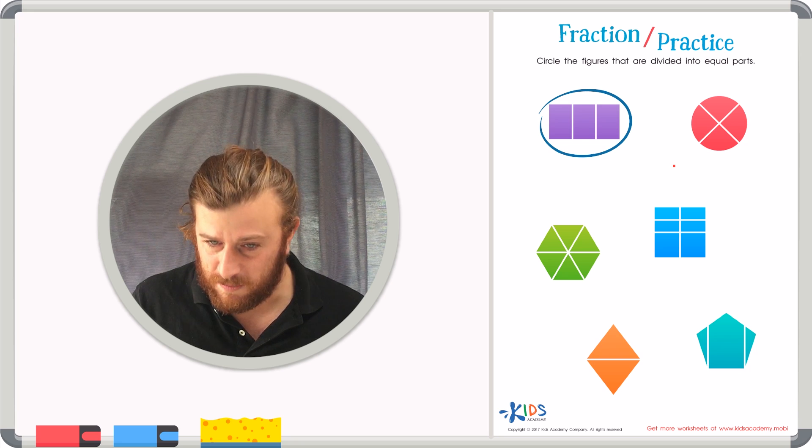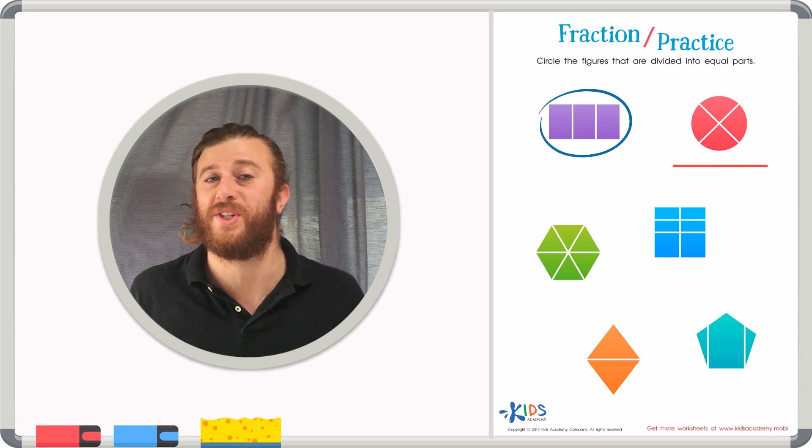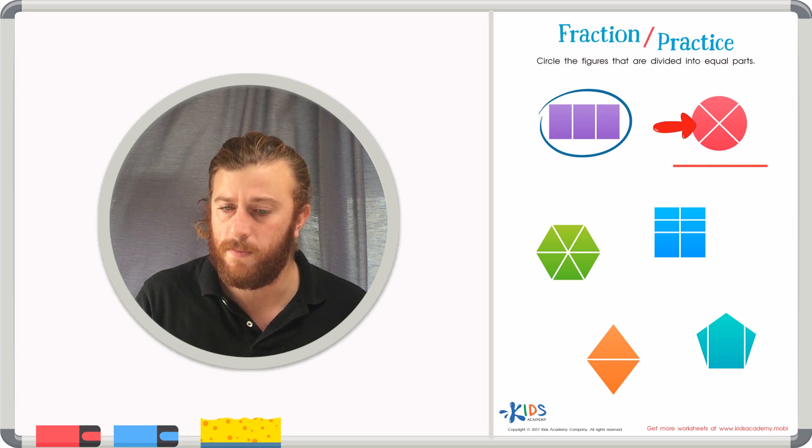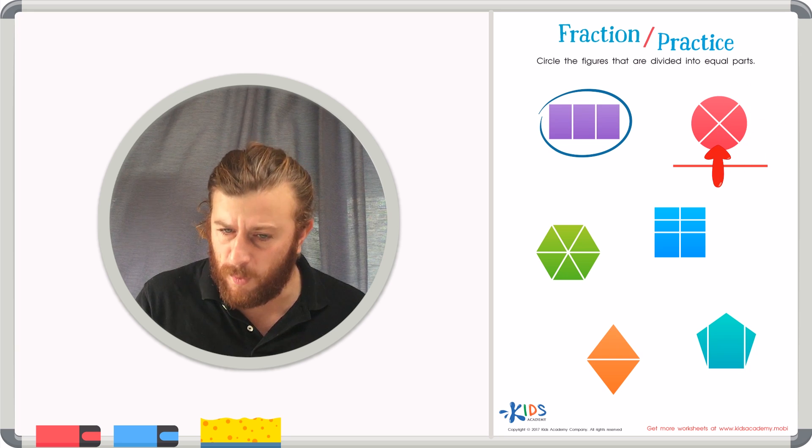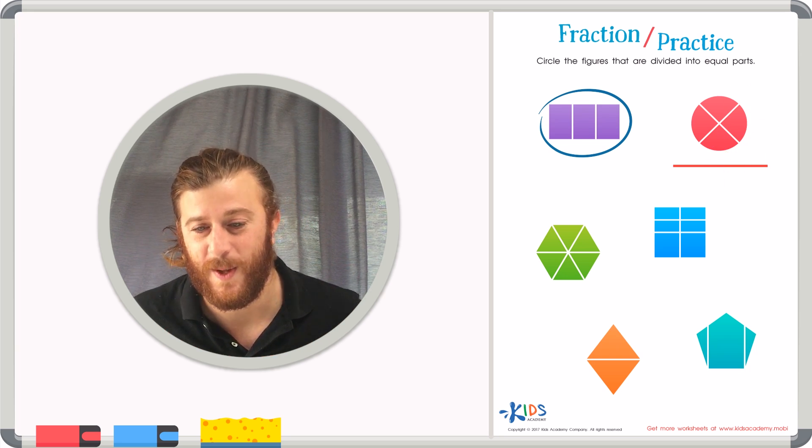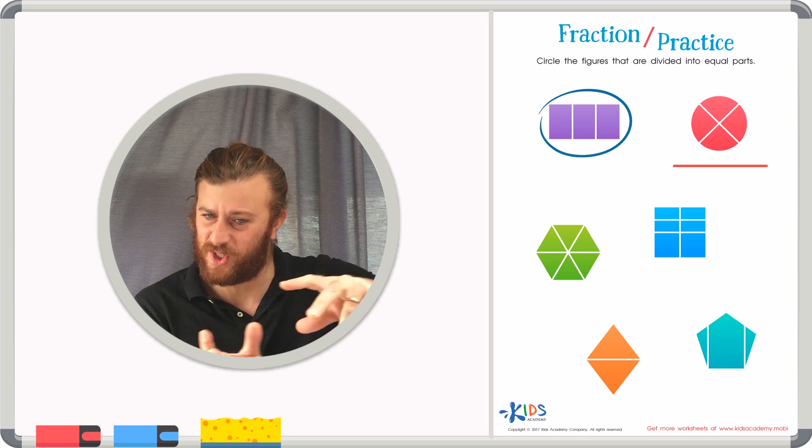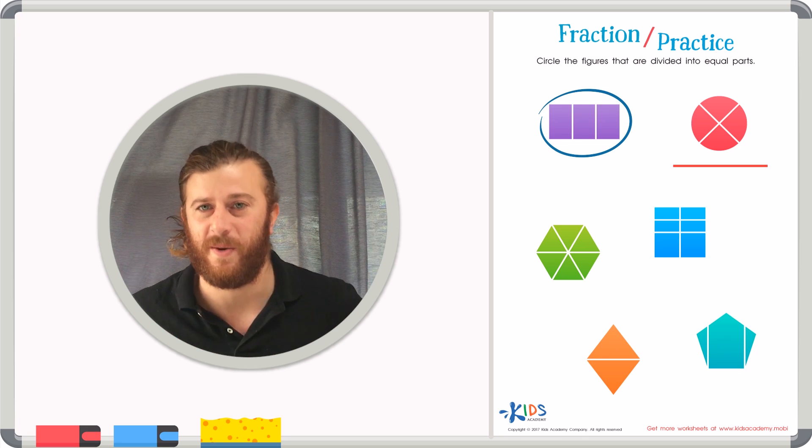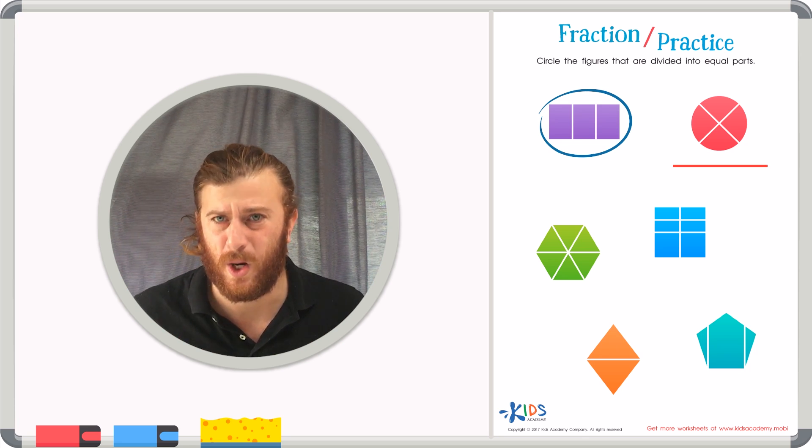Our next shape is a circle. How many pieces do you see? Well, I see one, two, three, four pieces. Now, they're not cut into boxes like our rectangle. But if you took each piece of the circle and put it on one another, do you think they'd fit? Are these equal pieces?